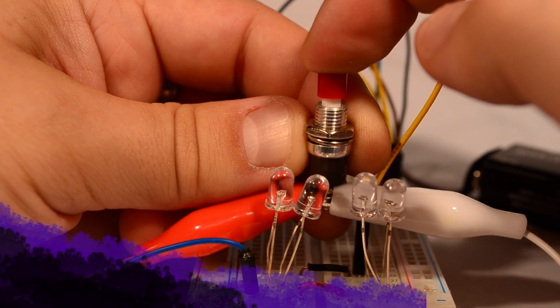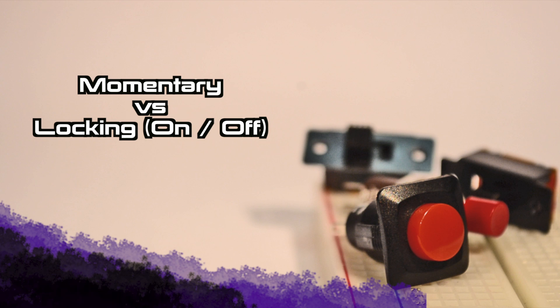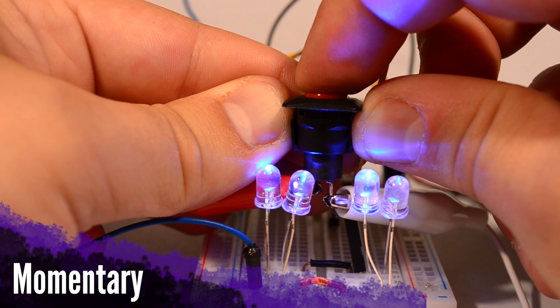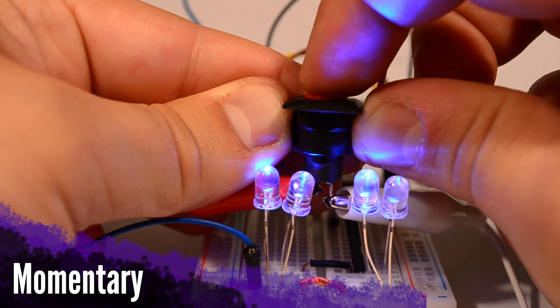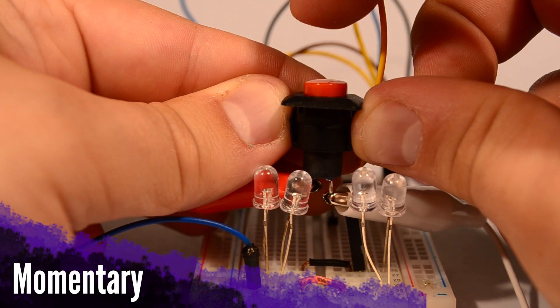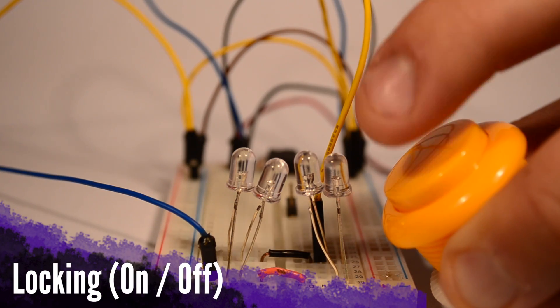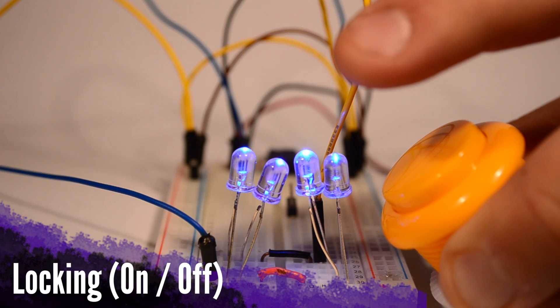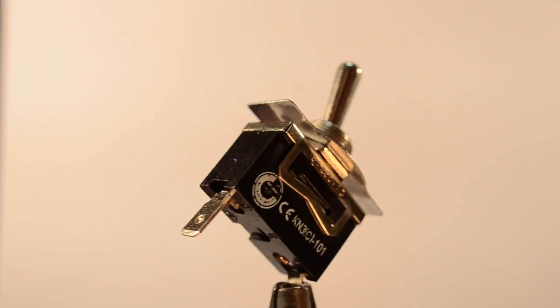You'll also see buttons designated as momentary or sometimes locking or on-off. Momentary buttons will only stay depressed while you apply pressure, while locking or on-off buttons require two pushes to change between connected and disconnected states.